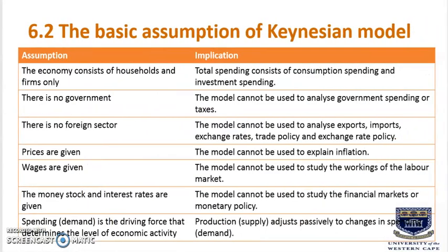The basic assumptions of the Keynesian model. The first assumption is that the economy consists of households and firms only, meaning total spending consists of consumption spending and investment spending. The second assumption is that there is no government, so the model cannot be used to analyze government spending or taxes. The third assumption is that there is no foreign sector, so the model cannot analyze exports, imports, exchange rates, or trade policies.